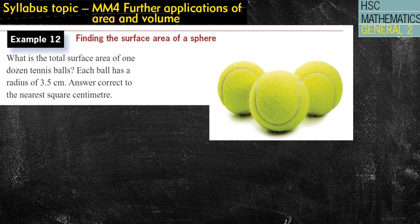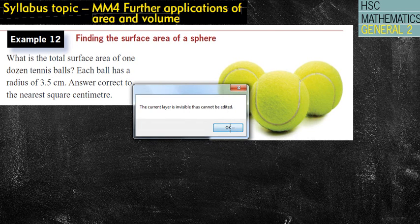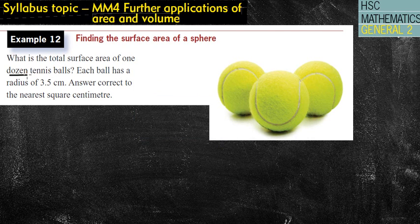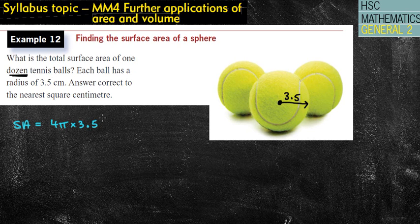Okay, so it wants the surface area of a dozen, which means it wants the surface area of 12 tennis balls. So, let's have a look for one tennis ball. So if I look for the radius of this particular tennis ball, we can see the radius is 3.5 centimeters long. So, the surface area of one tennis ball would be my 4π times 3.5 squared, because that's my rule of 4πr². Remember that rule that we've got on our formula sheet, 4πr².